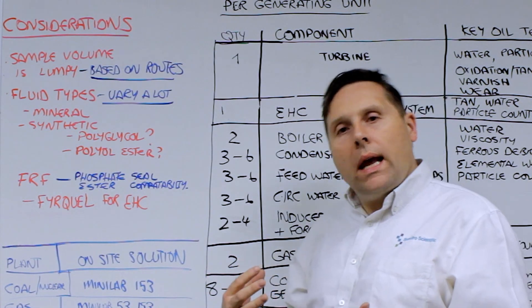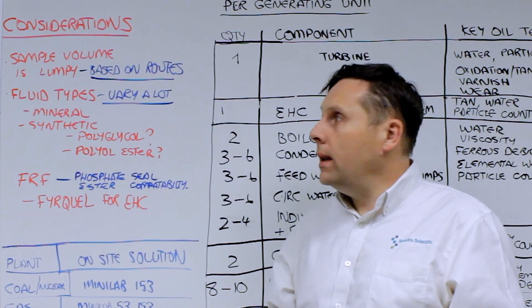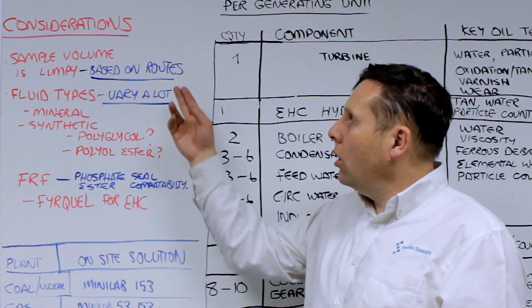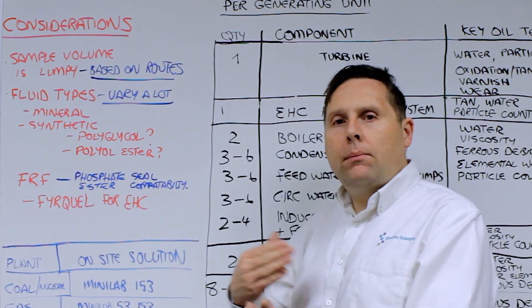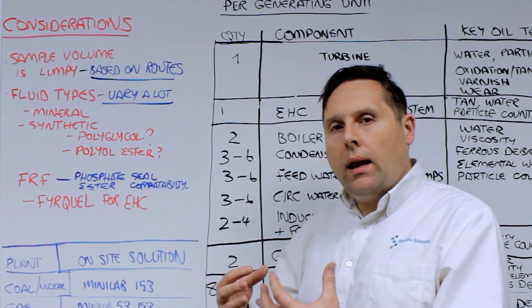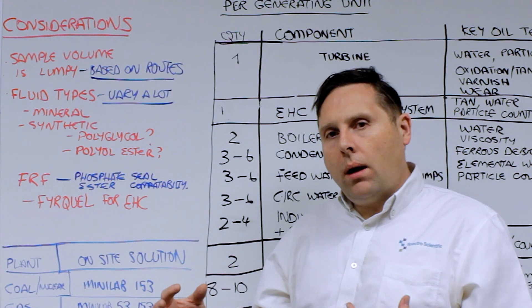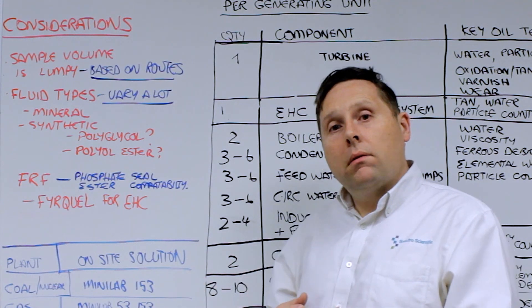Sample volume tends to be lumpy in power plants. What does that mean? It means that one day you can have maybe four samples. The next day you could have 40 samples. It all depends on the routes and the sampling frequency and availability. So having an on-site solution that can accommodate that lumpiness is very important.